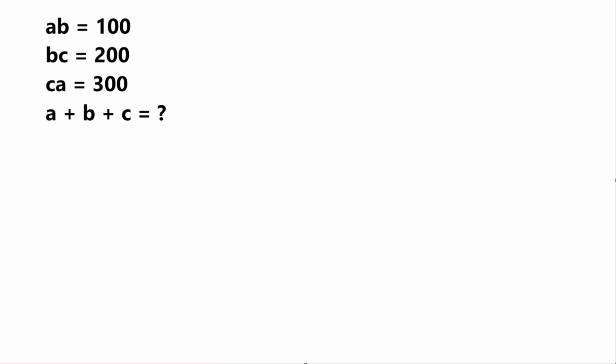The first thing I want to do is solve for a specific variable. We know that A times B is equal to 100 and B times C is equal to 200, so this must mean that AB plus BC is equal to 300, because 100 plus 200 equals 300.